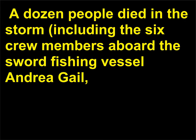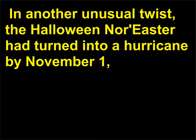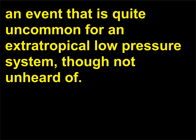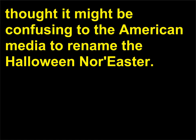A dozen people died in the storm, including the six crew members aboard the swordfishing vessel Andrea Gail — the subject of Junger's novel — and $1 billion in damages were incurred. In another unusual twist, the Halloween nor'easter had turned into a hurricane by November 1st, which is quite uncommon for an extratropical low-pressure system, though not unheard of. The new hurricane remained unnamed because the National Weather Service thought it might be confusing to rename the Halloween nor'easter.